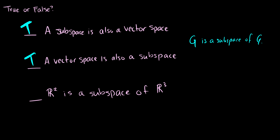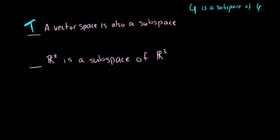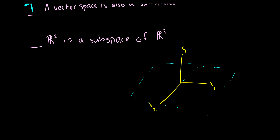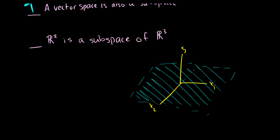Last question: Is R2 a subspace of R3? This is where you might get tripped up. Thinking visually with axes x1, x2, x3, you might think R2 is just a plane in that space — but that would be wrong. A vector in R2 looks like (x, y), while a vector in R3 has three entries: (x, y, z).